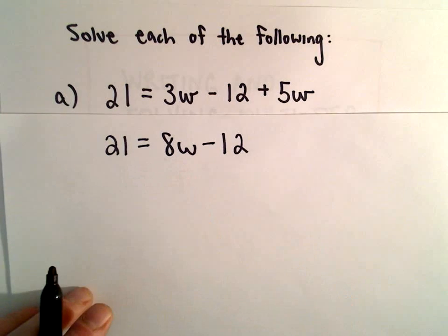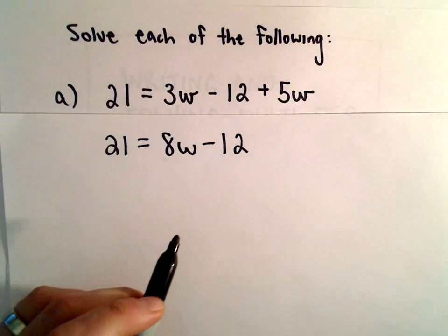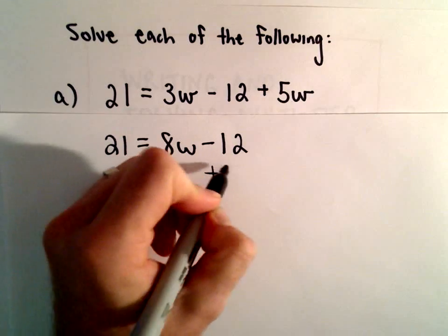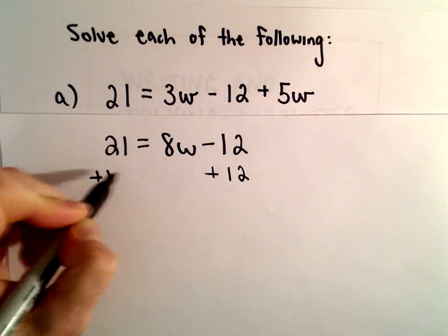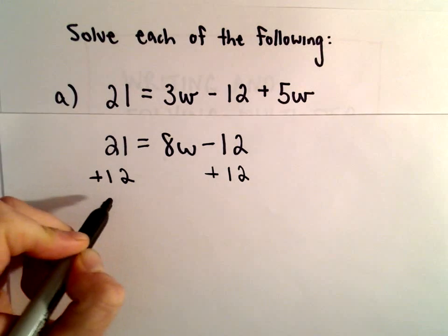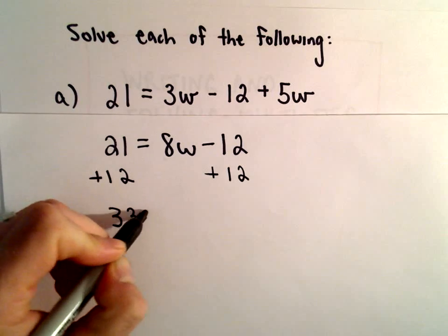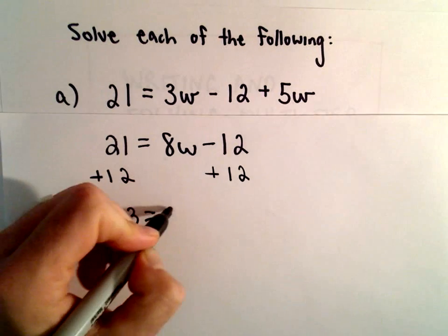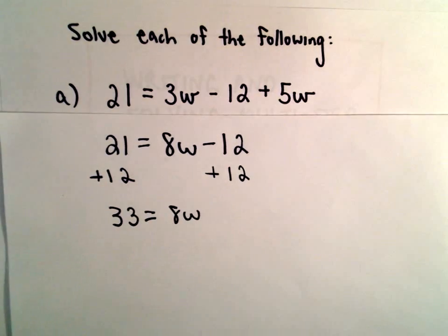And again I'm trying to get the W by itself so what I'm going to do is I'm going to add 12 to both sides. Well 21 and 12 is going to get 33, we're left with 8W on the right side.